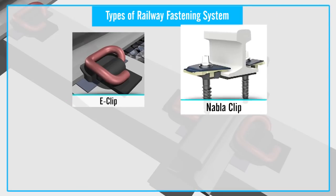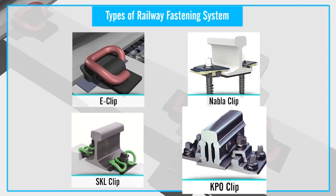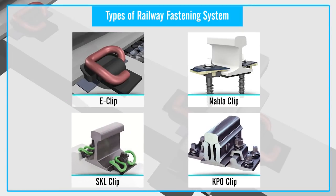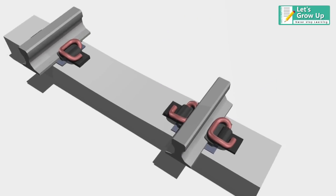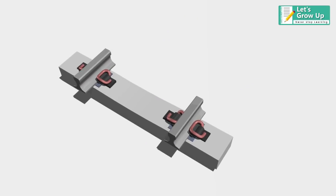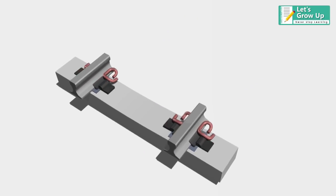The railway fastening systems can be divided into various types. Each type of rail fastening system has its own components which are different from other types. Rail fastening systems are typically named after the types of rail clip.